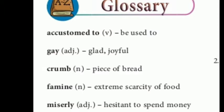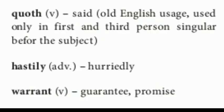Now let us do the glossary part. Accustomed to — it means be used to. Gay — it means glad or joyful. Crumb — it means piece of bread. Famine — it means extreme scarcity of food. Miserly — it means hesitant to spend money. Quoth — it means said; old English usage used only in first and third person singular before the subject. Hastily — it means hurriedly. Warrant — it means guarantee or promise.